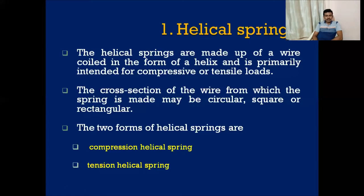These helical springs are generally designed for either compressive or tensile loads. The wire may be of various cross-sections — generally either circular, square, or sometimes rectangular cross-section wire. There are two types of diameters in helical spring nomenclature: the wire diameter and the coil diameter.